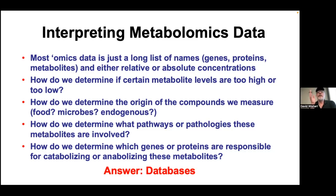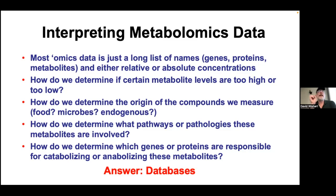In the case of metabolomics: how do we determine if a certain metabolite level is too high or too low? What's normal and abnormal? How do we determine the origin of those compounds? If you ask what gamma-aminobutyric acid is doing here — is it exogenous, produced by the body, produced by bacteria, or coming from the food?